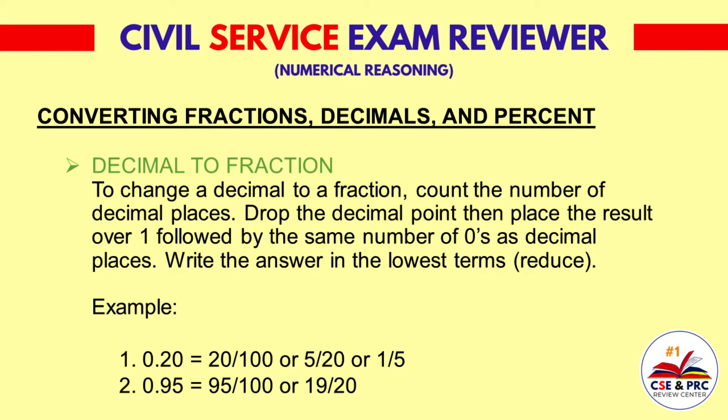Example 1: 0.20 is equal to 20 over 100, or simplified, 1 over 5. Example 2: 0.95 is equal to 95 over 100, or simplified, 19 over 20.